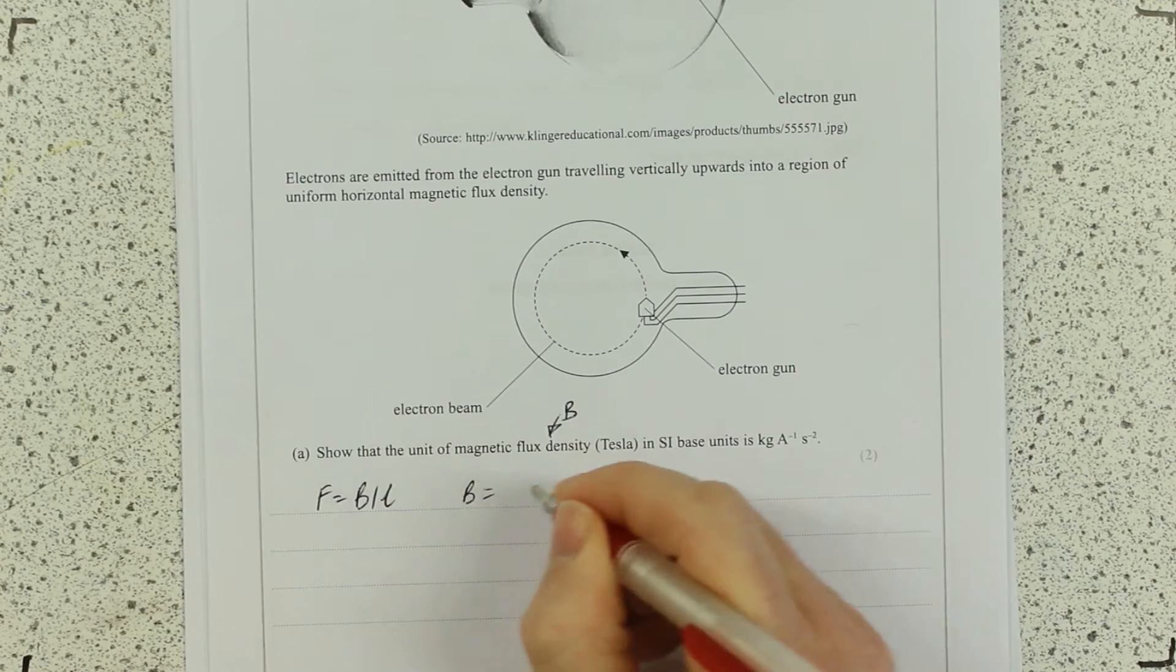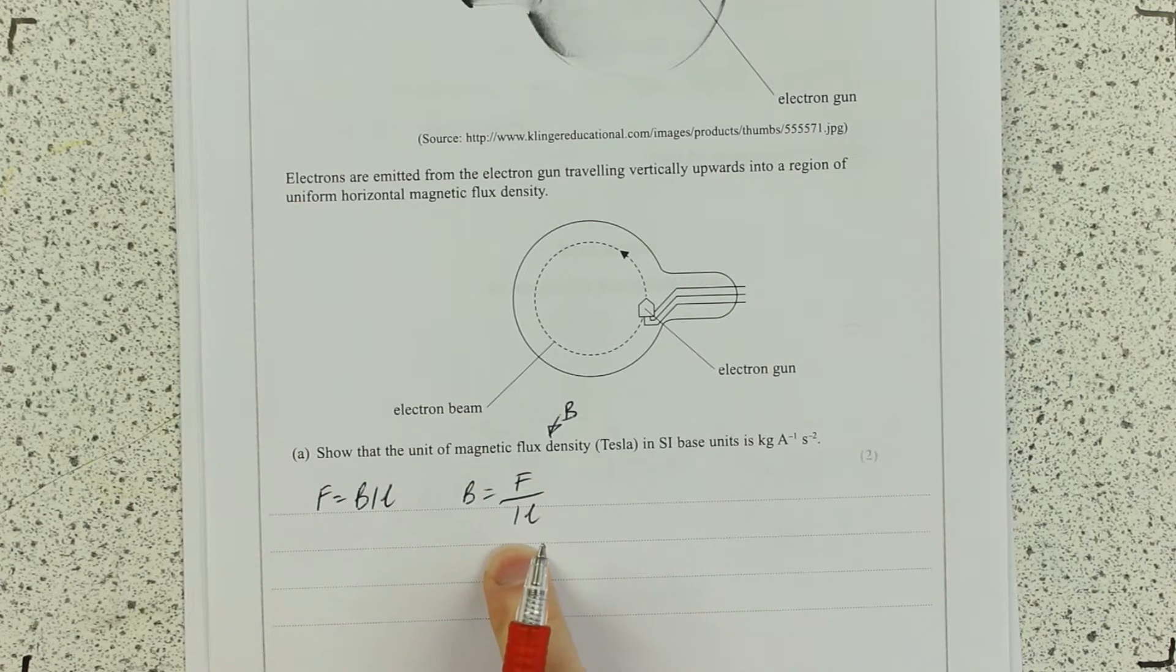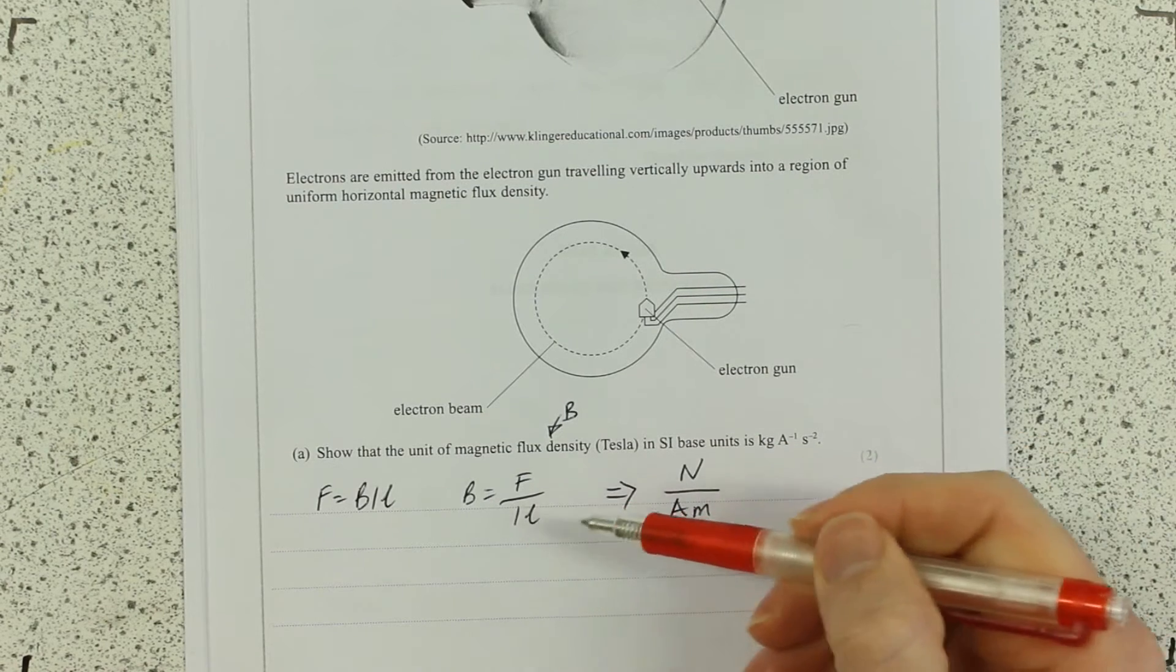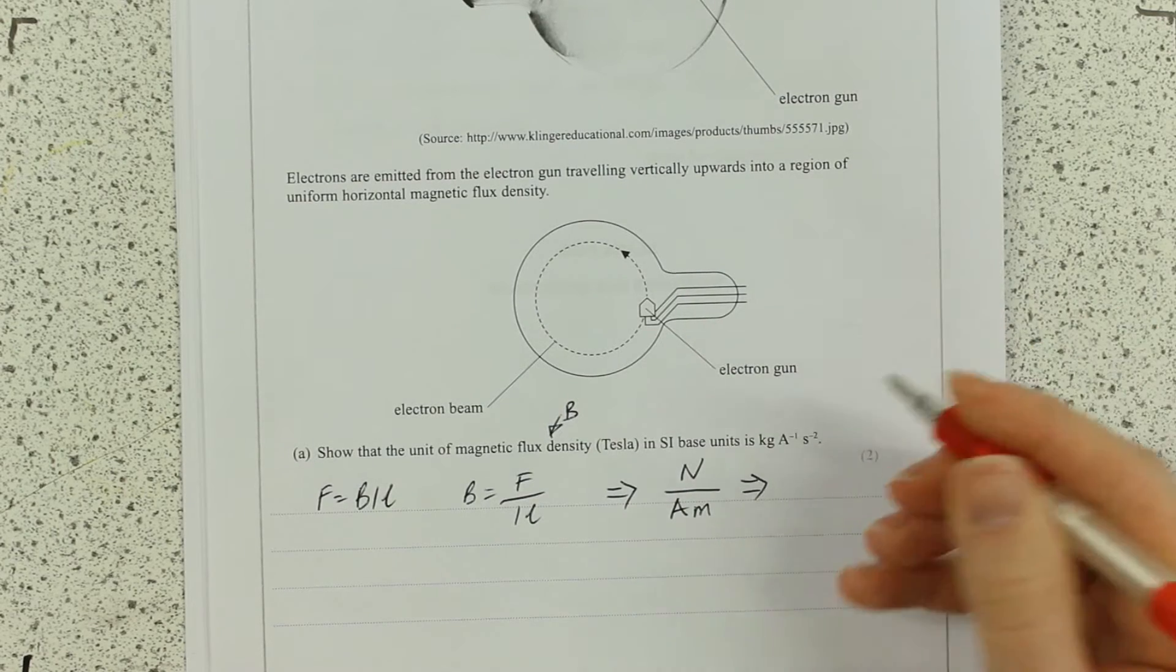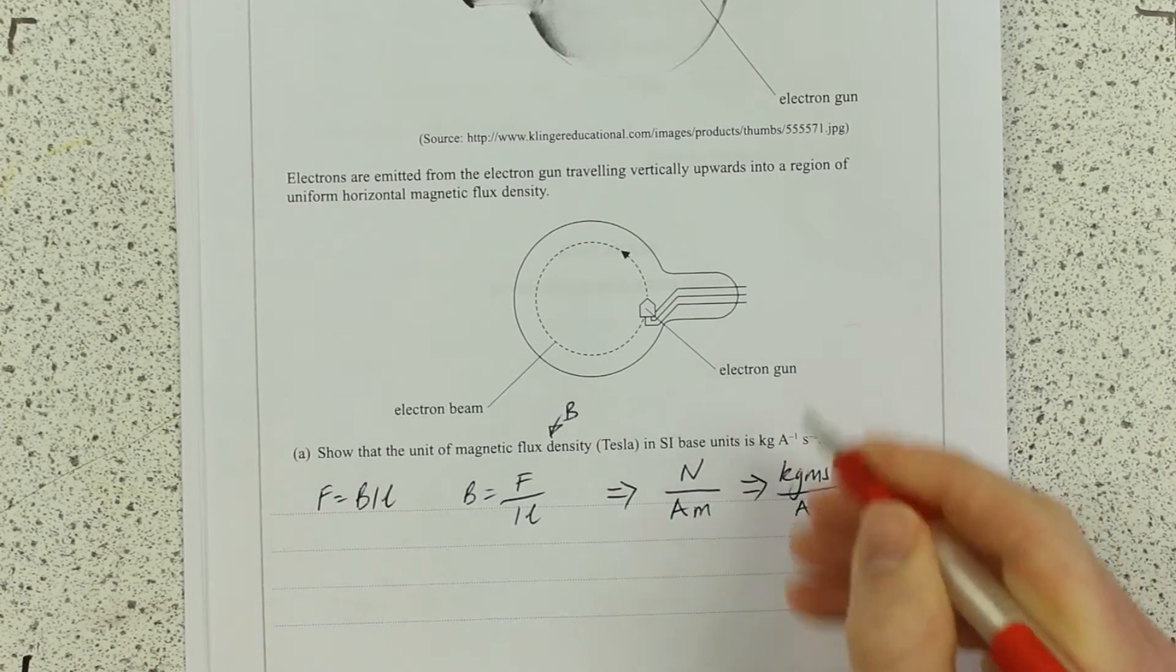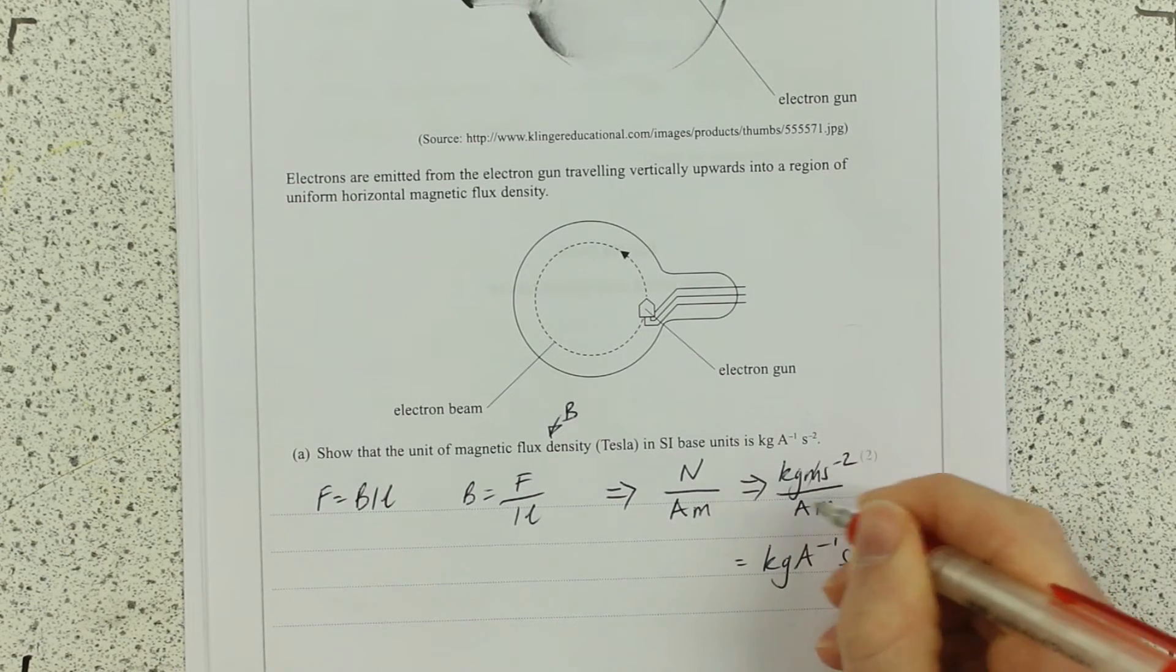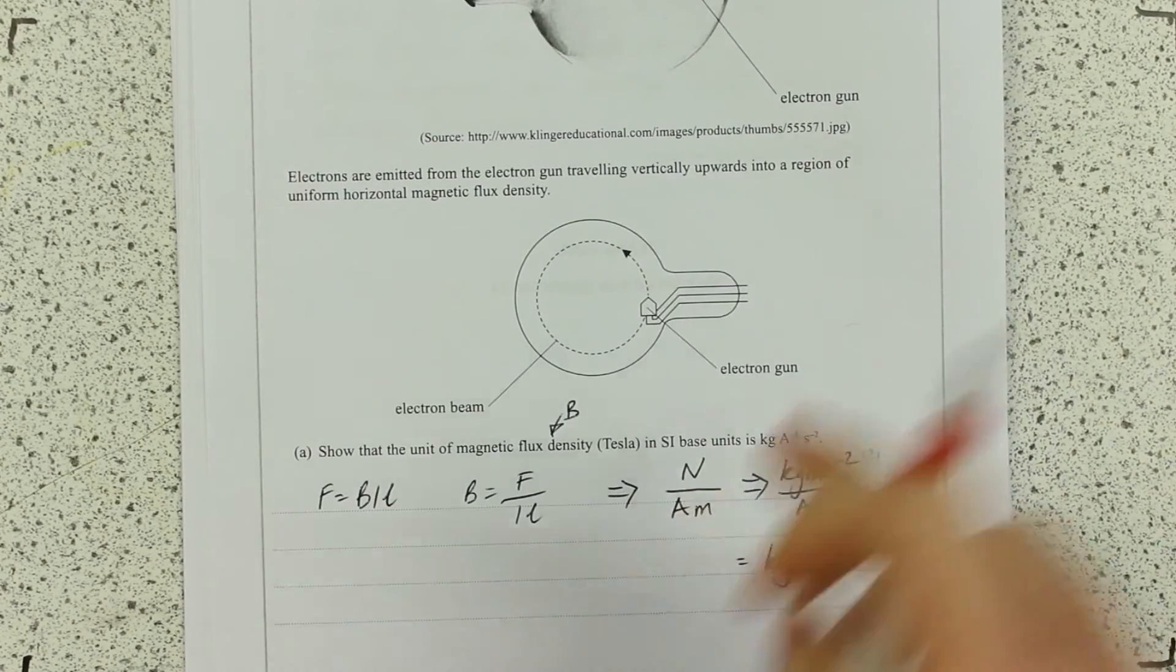Rearrange for B. B is F over I-L. Now why I use this? Because most of this is already in SI units. Which is a newton over an amp meter. All I need to do is take newtons down to SI. F equals MA, so kilograms meters seconds to the minus 2 over amps meters. A little bit of cancellation and rearranging gives me kg A to the minus 1 s to the minus 2. That's quite a straightforward one really.